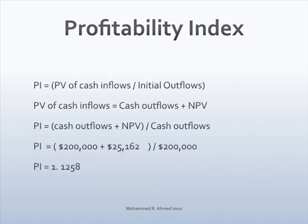Profitability index. To compute the profitability index, divide the present value of cash flows by the initial outflows. The present value of cash flows can be computed easily if we have information on the NPV. Add the NPV to the cash outflows and divide by the present value of cash outflows. The profitability index is 1.13.